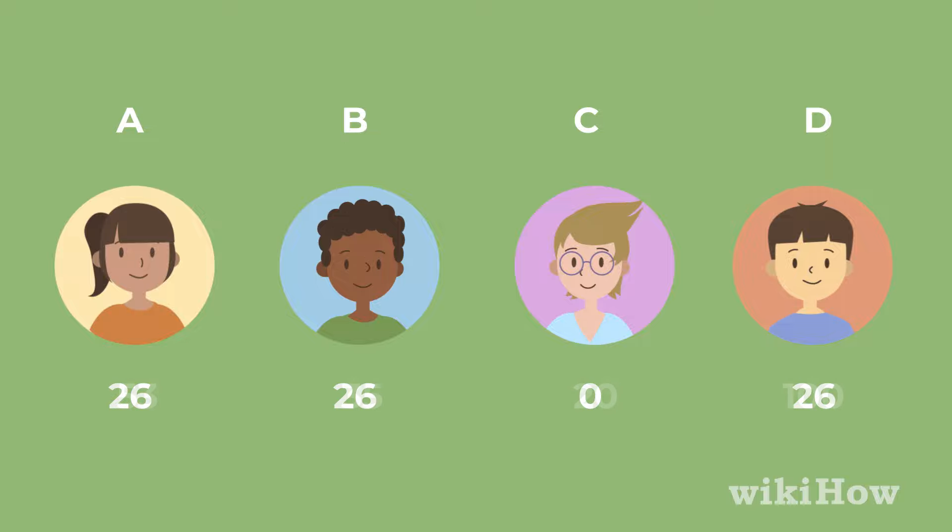Keep playing rounds until one player scores one hundred points or higher. At that point, whoever has the lowest score wins.